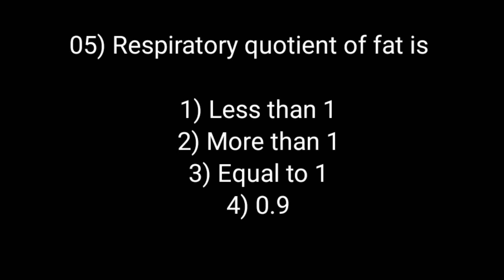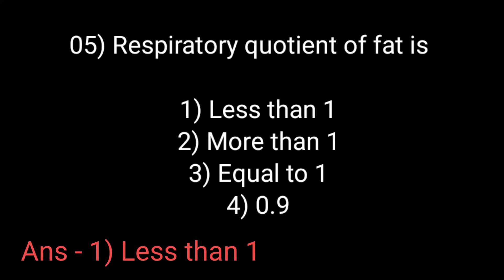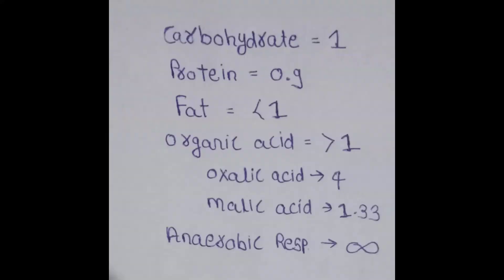The respiratory quotient of fat is: Option number first: less than one. Option number second: more than one. Option number third: equal to one. And option number fourth: 0.9. The correct answer is option number first: less than one. Here are some respiratory quotients — carbohydrate: 1, protein: 0.9, fat: less than one.